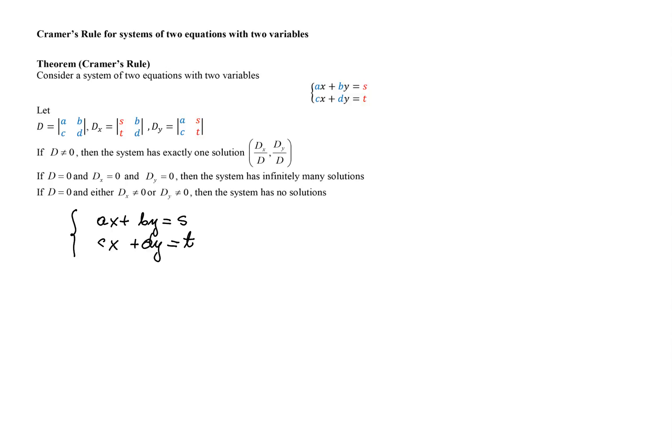We multiply the first equation by D and the second equation by negative B. The first equation becomes ADX + BDY = SD, and the second equation becomes -CBX - BDY = -TB.